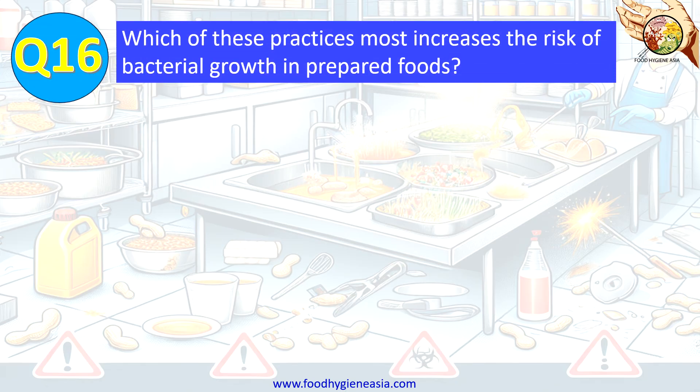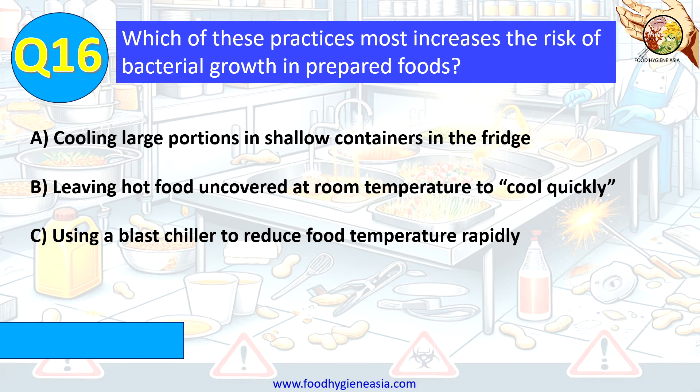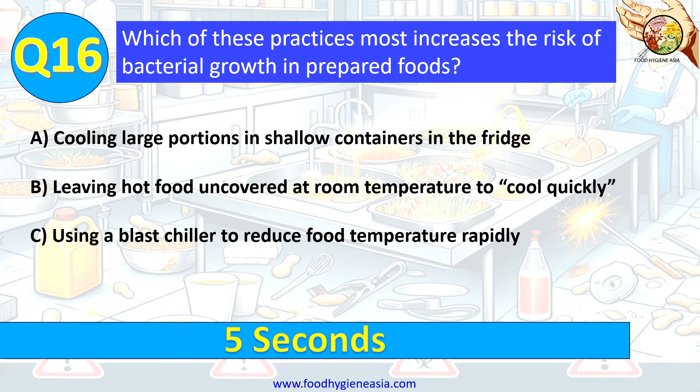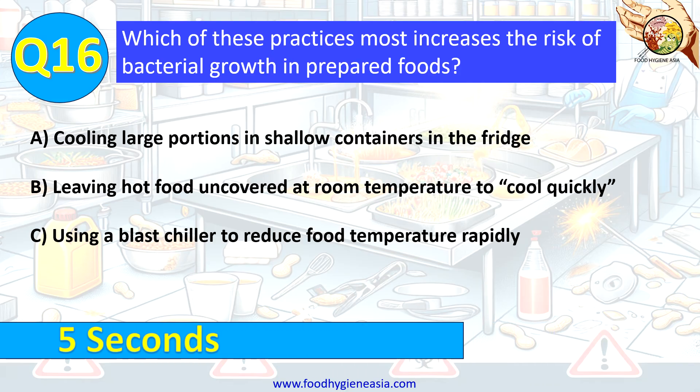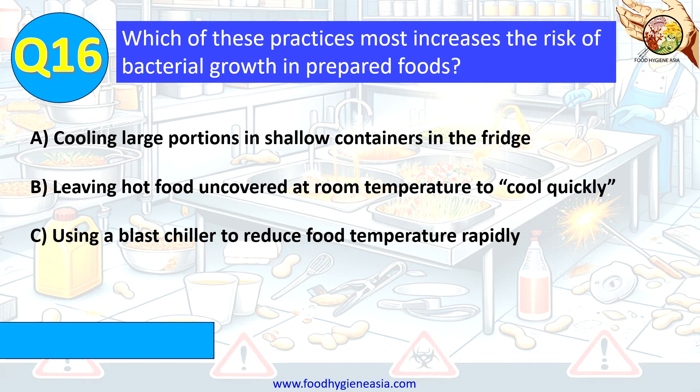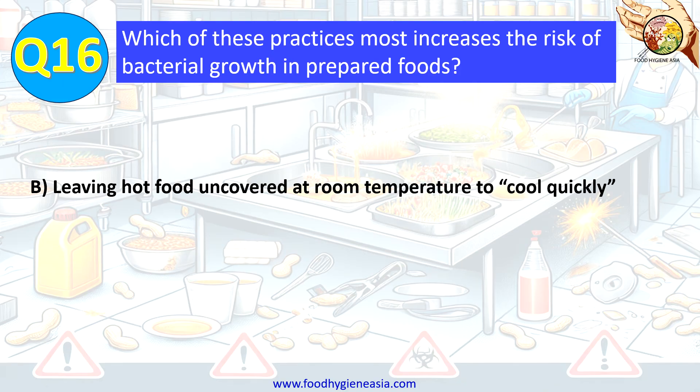Question 16. Which of these practices most increases the risk of bacterial growth in prepared foods? A. Cooling large portions in shallow containers in the fridge. B. Leaving hot food uncovered at room temperature to cool quickly. C. Using a blast chiller to reduce food temperature rapidly. The correct answer is B. Leaving hot food uncovered at room temperature to cool quickly.